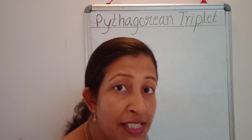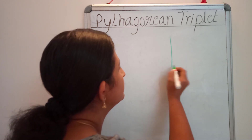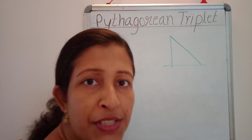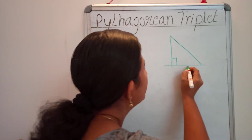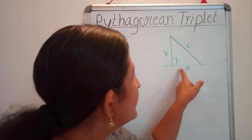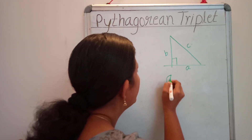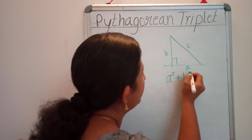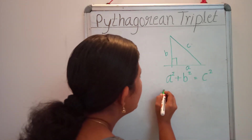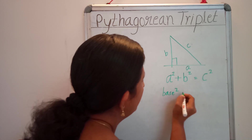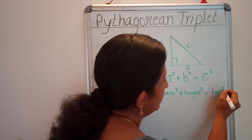Have you heard about the word Pythagoras theorem? Where have we used this theorem? If you have a triangle like this, the speciality of this triangle is that one angle is a right angle. This is the base of this triangle, this is the height, and C is the hypotenuse. We know Pythagoras theorem says A square plus B square equals C square — or equivalently, base square plus height square equals hypotenuse square. Both are the same.